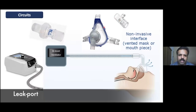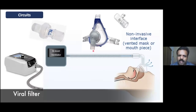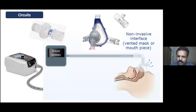There are two types of leak port. Similarly, when connecting a single-limb non-invasive ventilator to a tracheostomy tube, you must connect a leak port. In COVID settings, instead of a vented mask, we use a non-vented mask and place a viral filter followed by a leak port. Whatever gas exits is first filtered through the viral filter, then exhaled out.